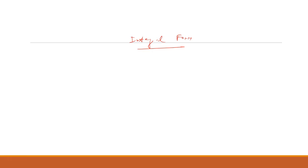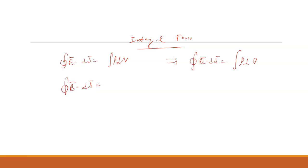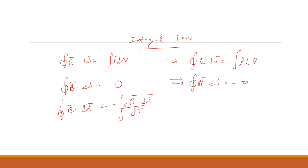Similarly, in the integral form: the first equation, the surface integral of E dot dS equals the volume integral of rho dV, remains the same. The second, the surface integral of B dot dS equals zero, also remains unchanged. The third was the line integral of E dot dL equals minus the surface integral of dB by dt dot dS — since B is constant, this becomes zero.